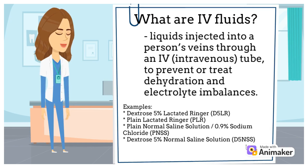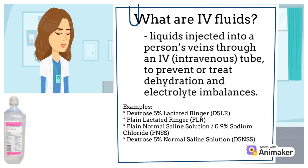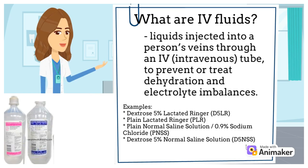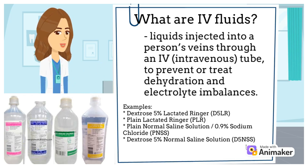Examples: Dextrose 5% Lactated Ringer, or D5LR. Plain Lactated Ringer, or PLR. Plain Normal Saline Solution, 0.9% sodium chloride, or what we call PNSS. Dextrose 5% Normal Saline Solution, or D5NES.